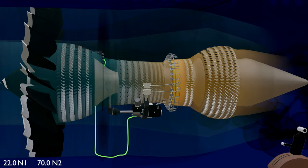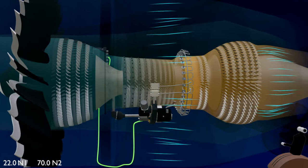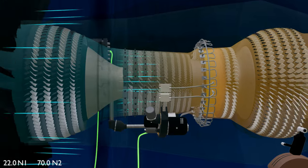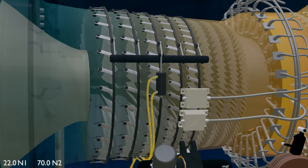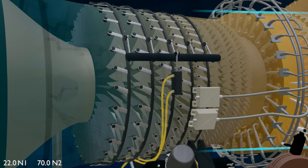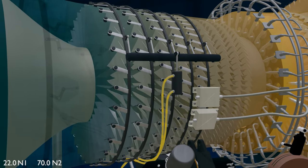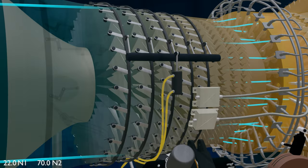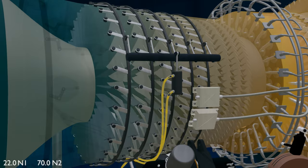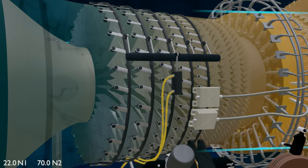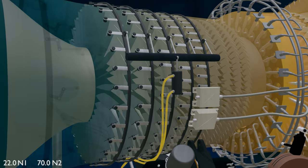To prevent this, the EEC commands the HMU to operate the variable stator vane. The HMU now sends pressurized fuel to the VSV actuators. Two VSV actuators on either side of the engine control the torsion rods. The torsion rods are connected to five unison rings on the HPC casing. The unison rings with linkages turn the IGV and stator vanes of the HPC stages.